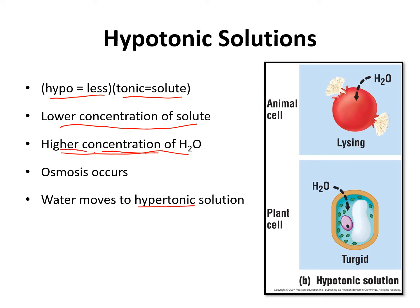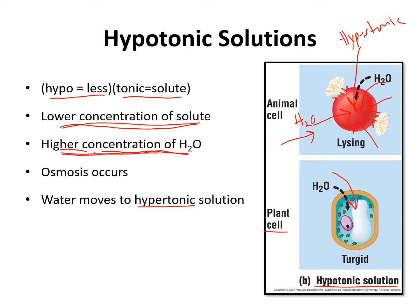Here is an example of putting cells in a hypotonic solution. The environment is hypotonic, which means inside the cell it must be hypertonic. The hypotonic solution has the lower concentration of solute and therefore the higher concentration of water. So the environment is where you have the higher concentration of water, and it is going to move into the cell. If enough water keeps moving into the cell, the animal cell is going to rupture. For plant cells, a lot of water moves in, but the plant cell will not rupture because it has a rigid cell wall, which prevents the membrane from rupturing.